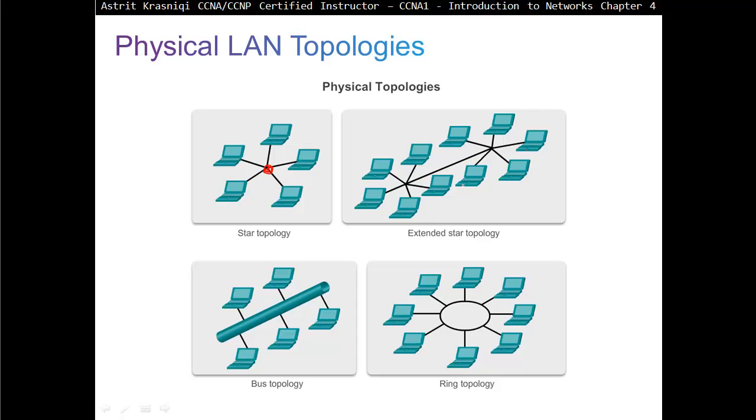Then we have bus topology, a legacy topology where all devices connect to this cable. Or ring topology where the token goes through the ring, around the ring, and devices send information only if they have that token. Out there, extended star topology is the most famous, used in production networks.